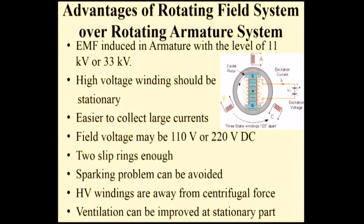The high-voltage winding should be stationary. It is also easier to collect large current if the armature is stationary — if the armature is rotating, collecting electrical energy from it is very difficult. Additionally, the field voltage is normally only 110 to 220 volts. Since the field system is rotating and you are giving only 110 to 220 volts — which is much less compared to 11 kV or 33 kV — it is easy to supply this low voltage to the rotating field system.